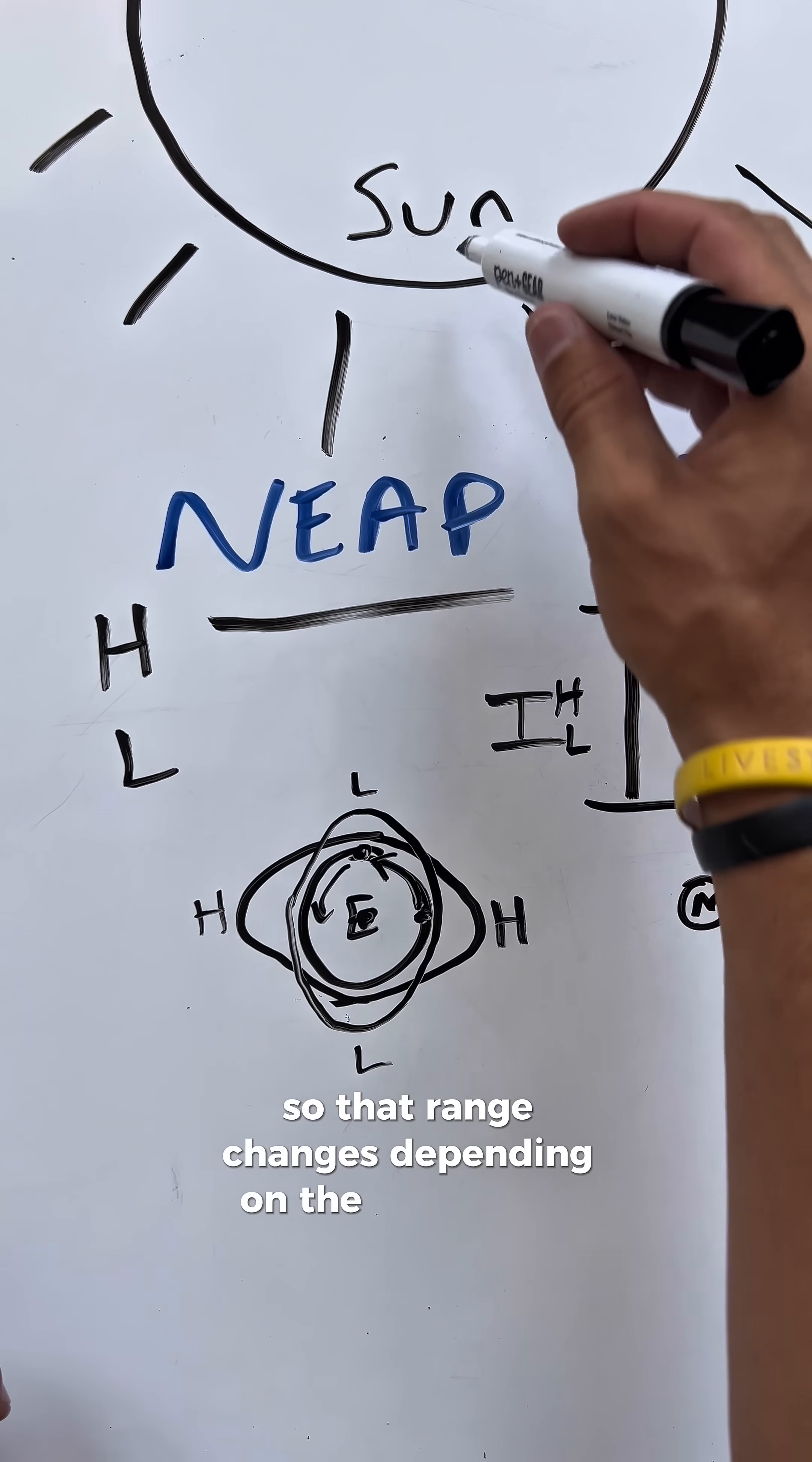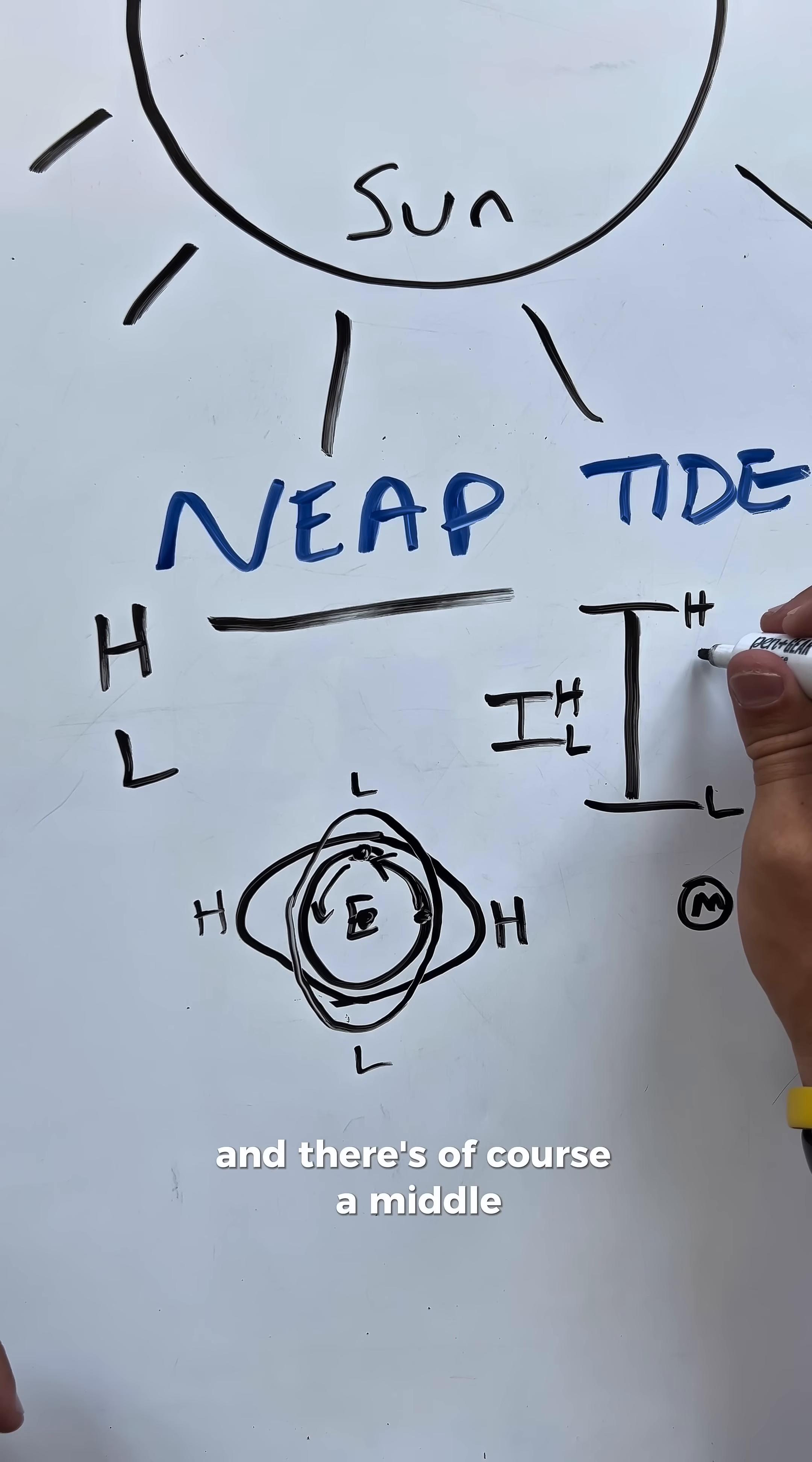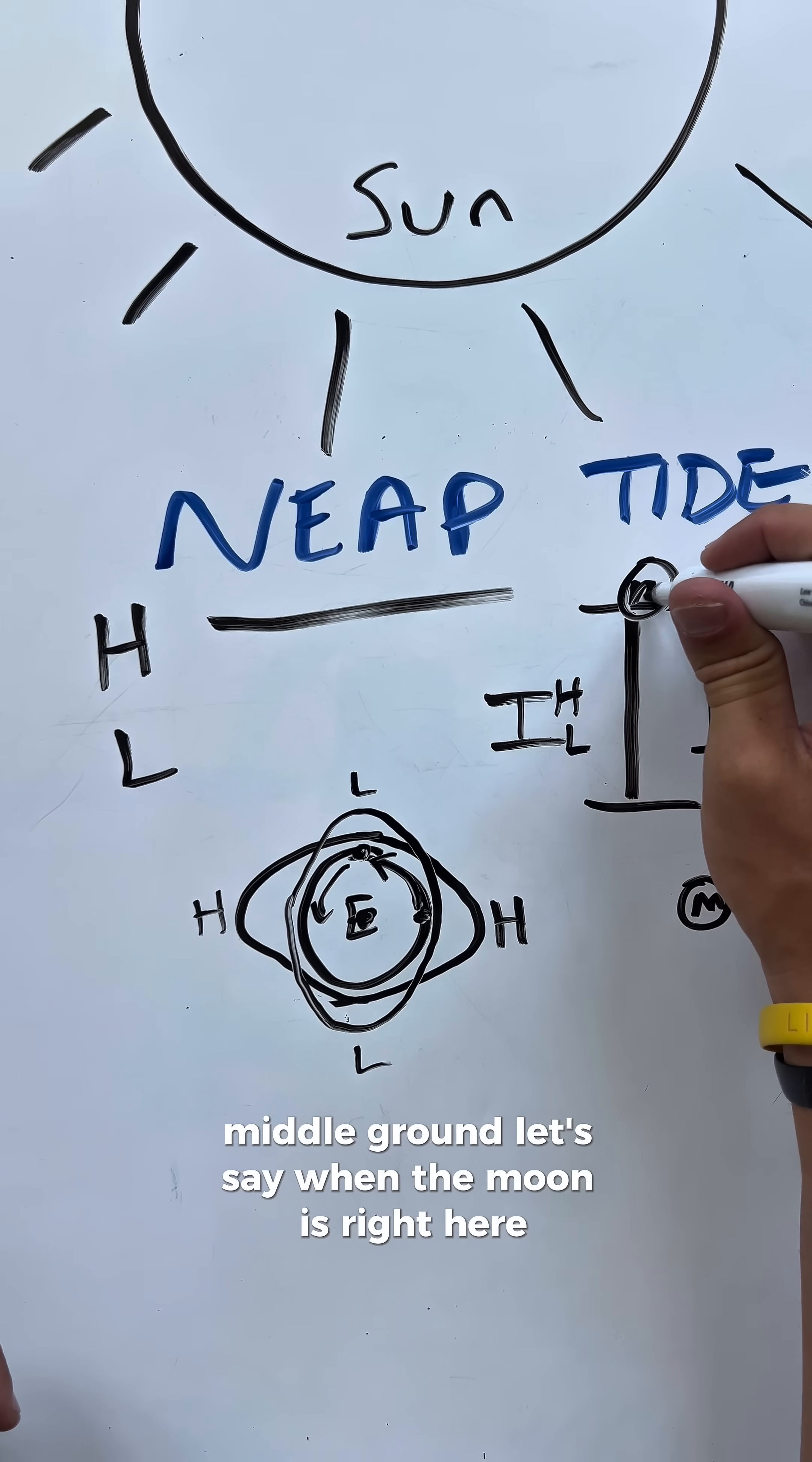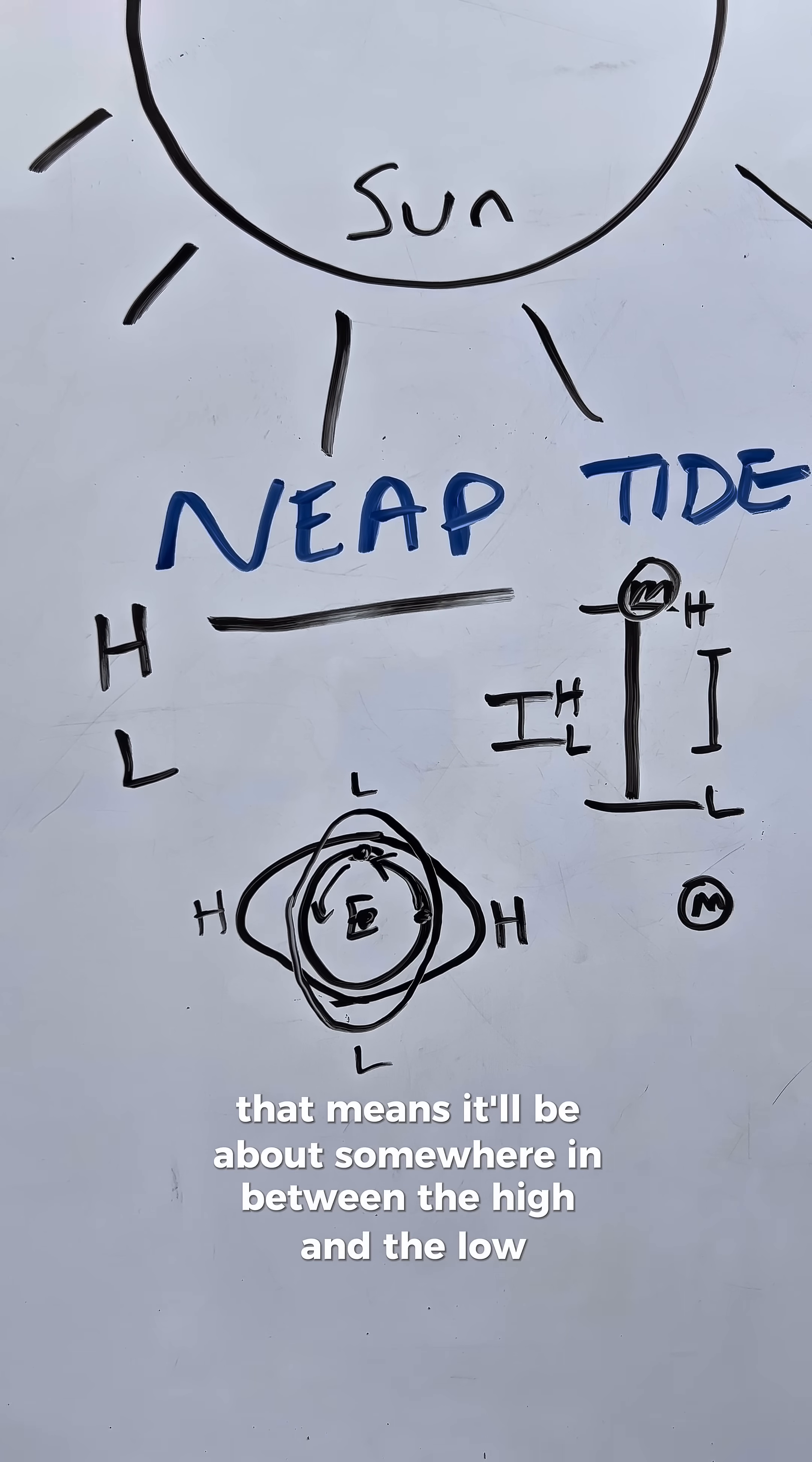So that range changes depending on the position of the sun, moon, and the earth. And there's of course middle ground, let's say when the moon is right here. That means it'll be somewhere in between the high and the low, spring and neap.